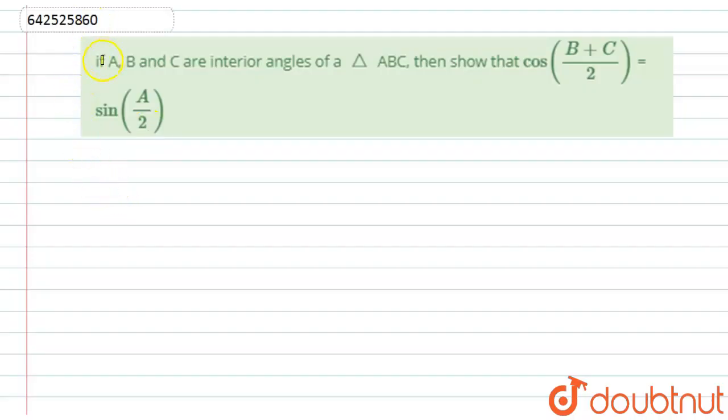Here we have given: if A, B, and C are the interior angles of triangle ABC, then show that cos((B+C)/2) equals sin(A/2). Let us start with the solution.